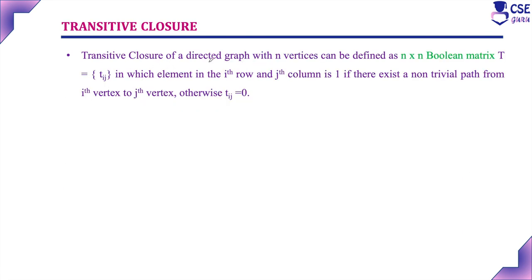The transitive closure of a directed graph with n vertices can be defined as an n×n Boolean matrix T, where element tij in the i-th row and j-th column is represented as 1 if there exists a non-trivial path from the i-th vertex to the j-th vertex; otherwise tij is represented as 0, meaning there is no non-trivial path.